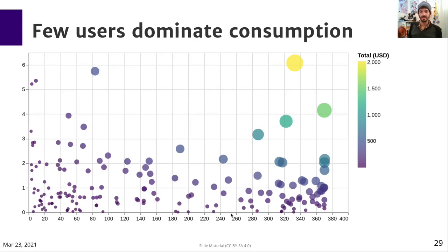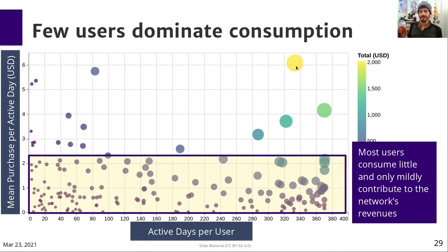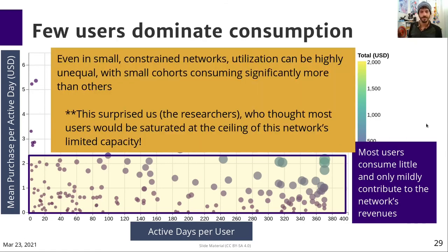Looking at spending in the network, this plot shows for each user the number of days they were active, and the mean purchase per active day, where the size and color of the dot corresponds to total amount purchased. We can see that most users consume little and are only mildly contributing to the network's revenue. Even in a small constrained network, utilization can be highly unequal, with small cohorts consuming significantly more than others. This really surprised us as a research team, since we thought most users would be saturated at the ceilings of the network's limited capacity, but there's actually a lot of variance in usage.